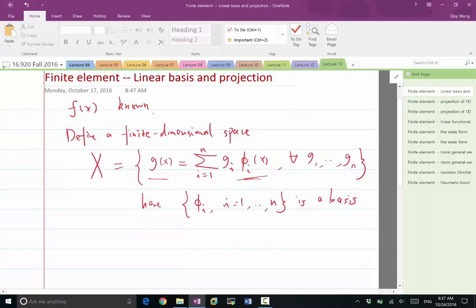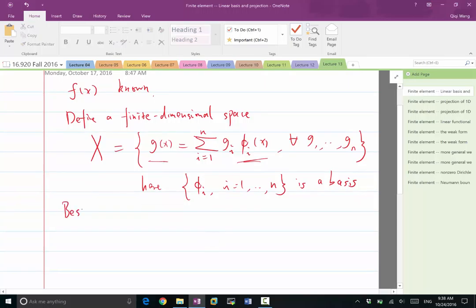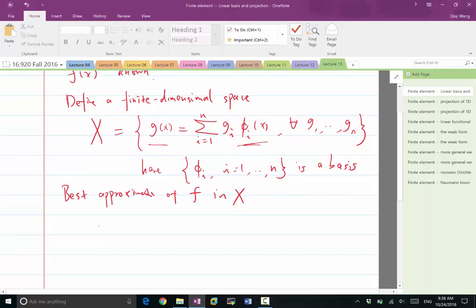So once we have that basis, we can construct the best approximation of f. Best approximation of f in X can be obtained by minimizing the distance ||f - g||, such that g is in that space. So the distance,